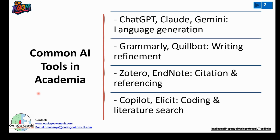ChatGPT, Claude, and Gemini — these are language generators, and people use them for ideation, for generating ideas, and for writing articles without properly validating what they have been given. Grammarly and Quillbot are used by people to refine AI-generated text just to make it look more human.